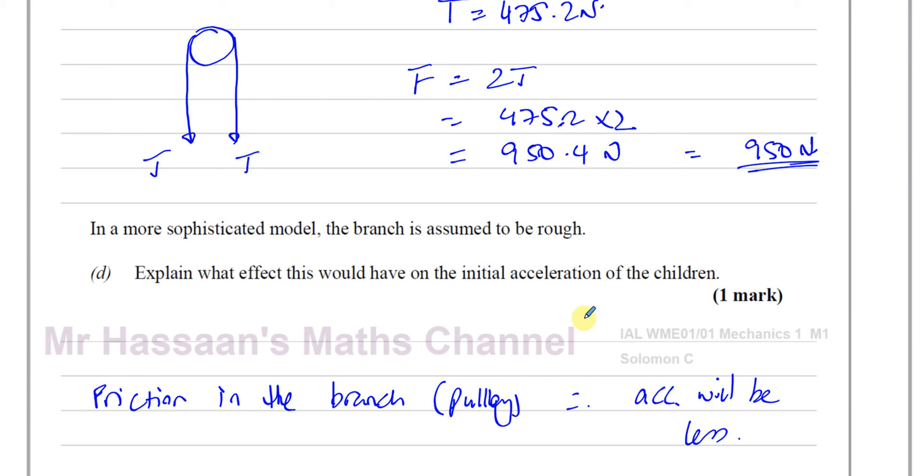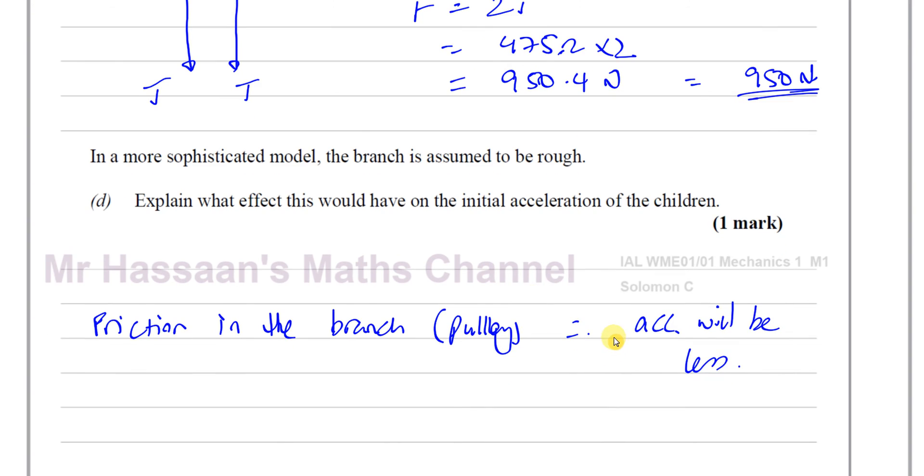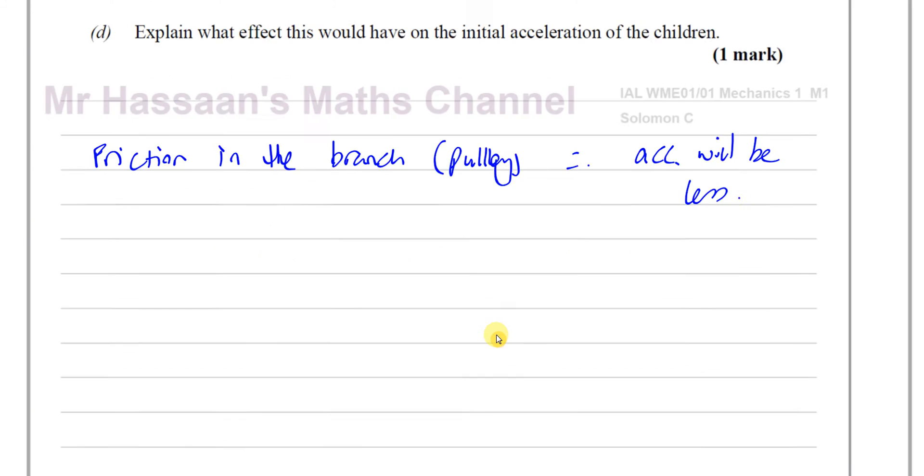One of the other things, sometimes when there's friction in the pulley, then the tension on both sides of the pulley will not be the same. We cannot assume it's the same, but they're only asking how it would affect the acceleration. The initial acceleration will be less than as if it was smooth because there's going to be some resistance to the initial motion. So acceleration will be less. That's one mark. That's fine. So there's the answer to part D.